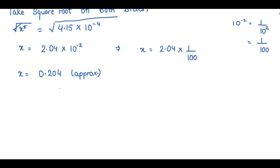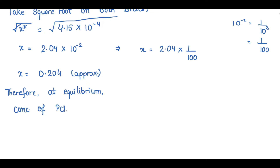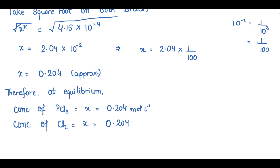The equilibrium concentrations of PCl₃ and Cl₂ are therefore: Concentration of PCl₃ = x = 0.204 mol/L (mole per liter). Concentration of Cl₂ = x = 0.204 mol/L. Both concentrations are equal since the stoichiometry of the reaction produces one mole each of PCl₃ and Cl₂ per mole of PCl₅ dissociated.